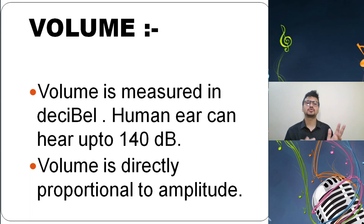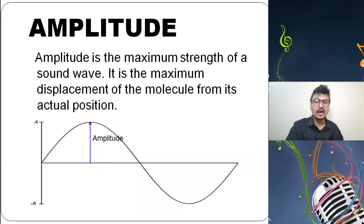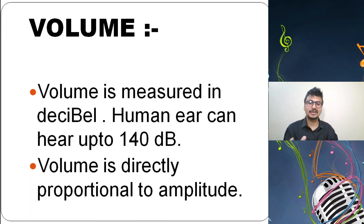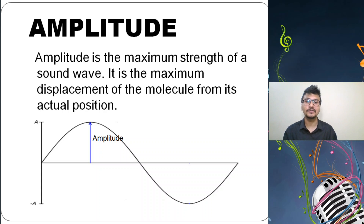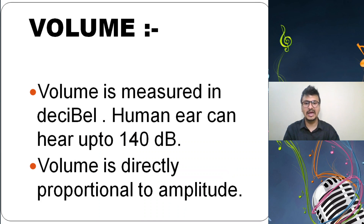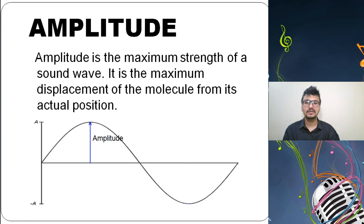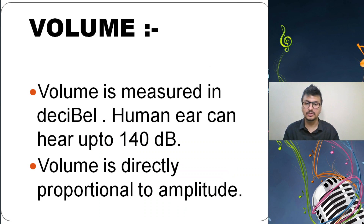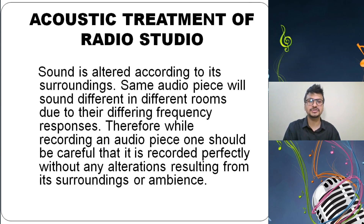Volume is directly proportional to amplitude. In the example of 'hello' said normally versus 'hello' said loudly: in the first case, volume was comparatively low, so amplitude was low. In the second case, the volume was high, so the amplitude was more. Therefore, volume is directly proportional to amplitude.